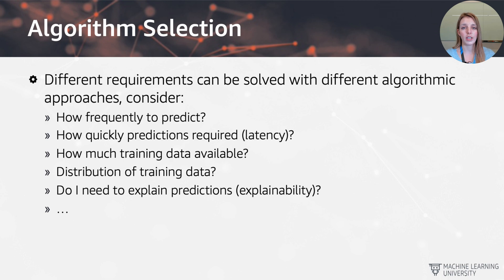And it will also depend on how much training data is available, the distribution, the underlying distribution of the data itself, and the amount of explanations or explainability that I need to perform for the model. So how transparent can I be with the ingredients of the model?